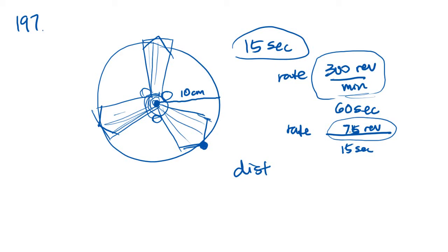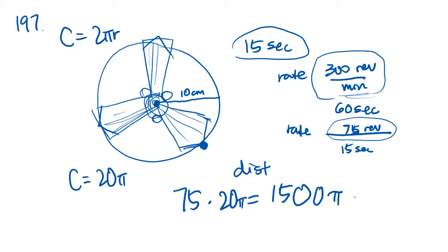So we need to figure out the distance traveled by this fan blade in 15 seconds. What we know is that in 15 seconds, it turns around 75 times. The circumference is going to be 2 pi r. If r is 10 centimeters, then the circumference is going to be 20 pi. We know that it makes 75 revolutions, so 75 times 20 pi is going to be 1500 pi. And that is answer B.